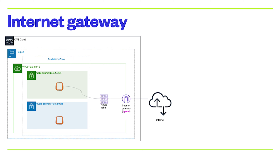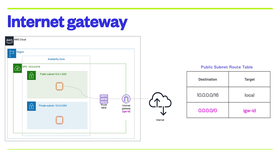Let us first discuss the Internet Gateway. We know from the previous class that a route table enables our EC2 instances in a private subnet and public subnet to communicate with each other. If the EC2 in the private subnet wants to communicate with the EC2 in the public subnet, the local target in the route table carries the message between them.